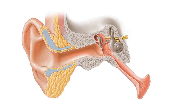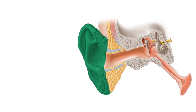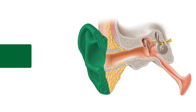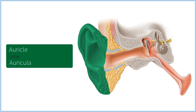Now let's start by looking at the structures of the external ear. The external ear consists of the part attached to the lateral aspect of your head, known as the auricle, that you see here highlighted in green, or what you probably call it your ear.